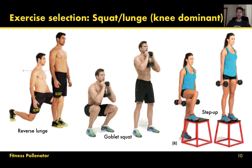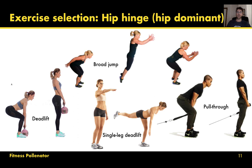For the lower body we have squatting and lunging movement patterns, which I like to lump together as knee-dominant exercises. These are characterized by deep knee flexion with about an equal amount of hip flexion — roughly 90 degrees of knee flexion at the bottom and similar hip flexion. They primarily hit the quads, but also the hamstrings and glutes. Next are hip-dominant exercises or hip hinges, which have less knee flexion relative to hip flexion, so they primarily target the posterior chain: hamstrings, glutes, and spinal erectors.